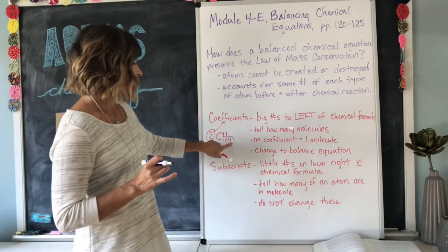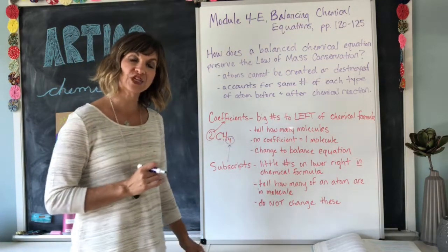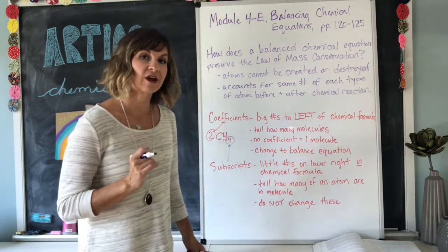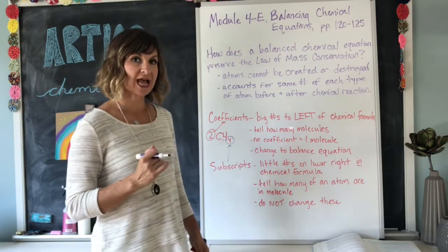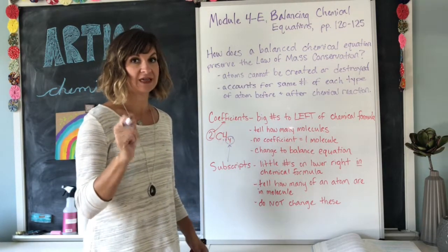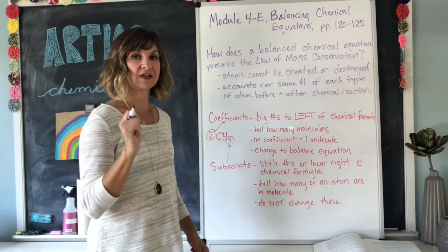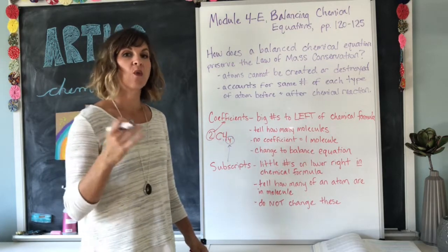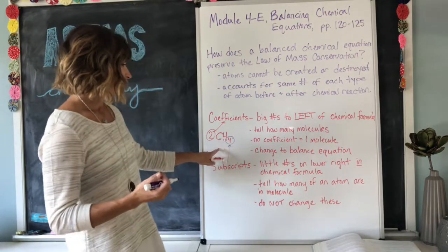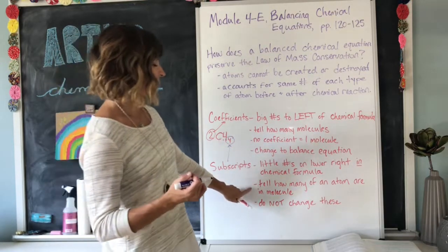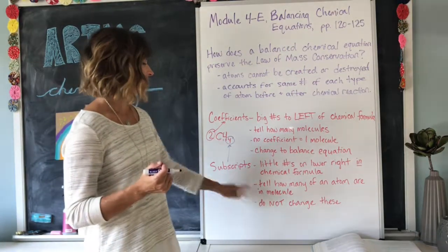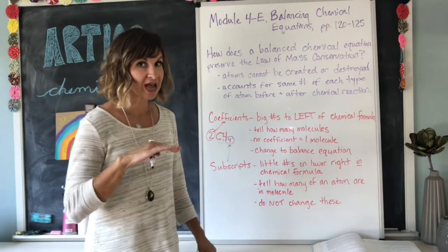There is a subscript four after the H, meaning that there are four hydrogen atoms. This is also where having those first 20 elements on the beloved periodic table is going to be necessary. The subscripts tell us how many of an atom are in each molecule. And finally, the subscripts we do not change.